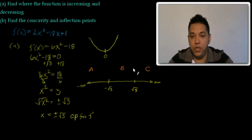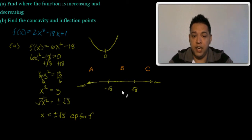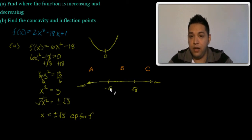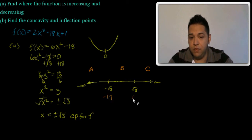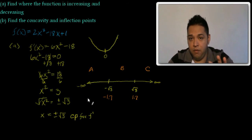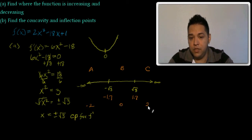For these three regions, we have to pick a test point within each region. I designed this problem so the critical points aren't whole numbers — they're radicals. Whenever you have a radical as a critical point, plug it into your calculator and approximate. Here it's approximately −1.7 and +1.7, so the test points I'll choose are −2, 0, and +2.